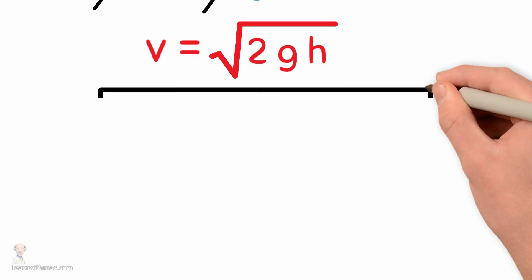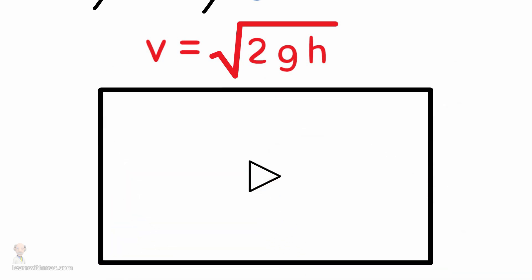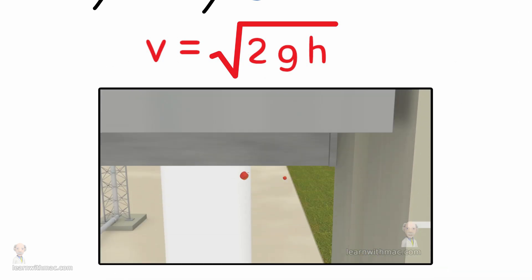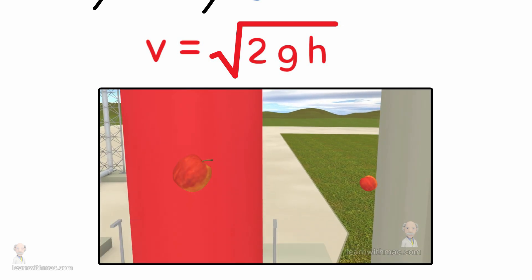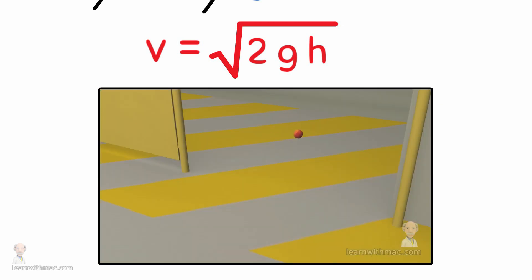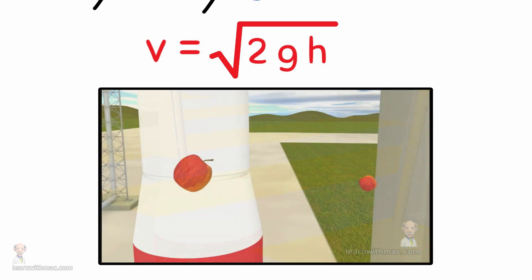That is incredible. It tells us that if you dropped a tiny little apple or a really large apple they would both have the same velocity as they hit the ground. You can learn more about this in my video on gravity.